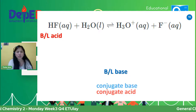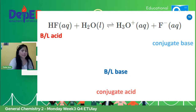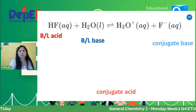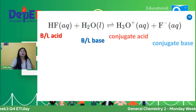Tama ang sagot niyo. So syempre, ang kanyang conjugate base ay ang natanggalan ng H — so that is the F. And then ang kanyang Bronsted-Lowry base, yung capable of accepting proton, is H2O. And yung conjugate acid niya ay yung H3O, or the hydronium ion — the substance that is formed after it accepted the proton.